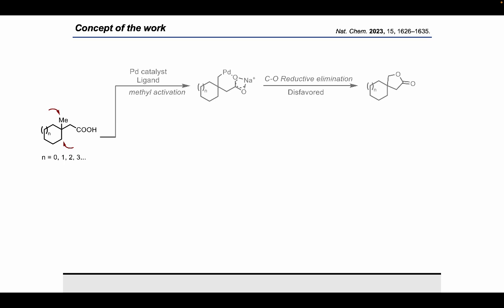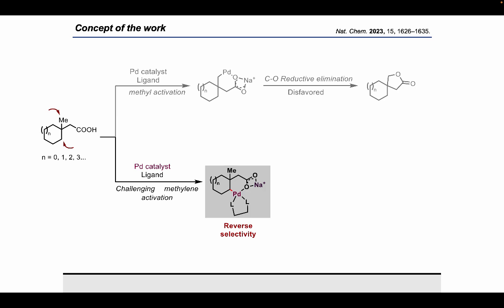If you carefully look at this carboxylic acid, the carboxylate group has two options to activate at the gamma positions — a gamma-methyl group or a gamma-methylene group, which are equally accessible. Going by conventional knowledge, one would expect the reaction to always occur at the methyl. However, the trick is that even if methyl activation could be easier, the subsequent step — a reductive elimination from a palladium(II) intermediate — would be difficult. On the other hand, if it activates the methylene group, it has the option to undergo beta-hydride elimination to form an alkenoic acid, which can then cyclize to form the lactone.